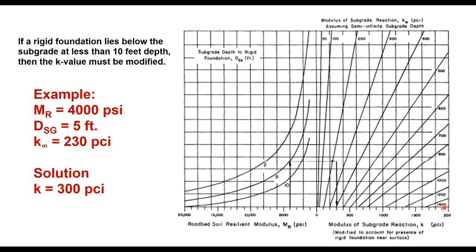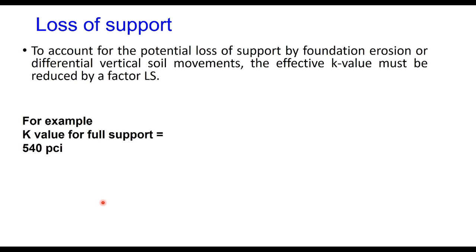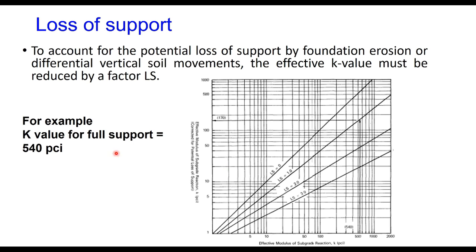The third correction is for loss of support. This is to account for the potential loss of support by foundation erosion or due to differential vertical soil movement. Therefore, the k value estimated from the earlier chart must be corrected for loss of support.